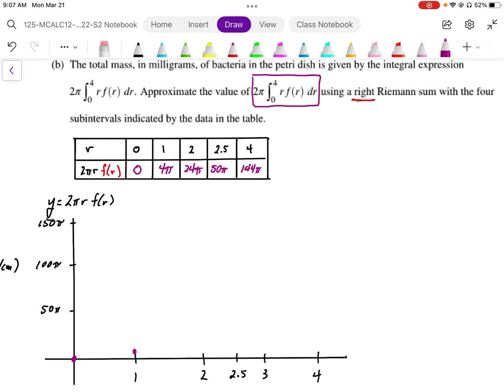24π maybe somewhere around here. 50π is going to be right about there. And 144π is going to be way up here. We're going to use a right Riemann sum, so we need to use that right edge to make our rectangles. These are our right Riemann rectangles.